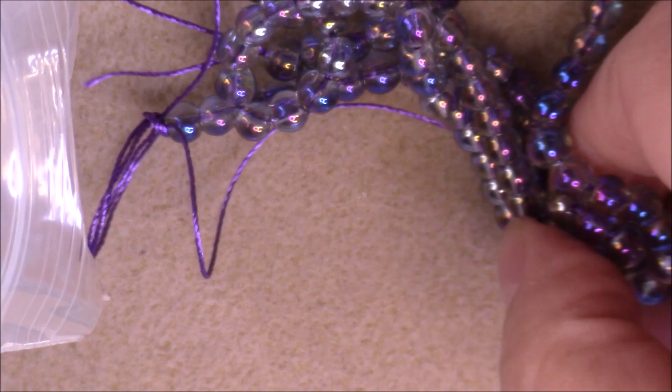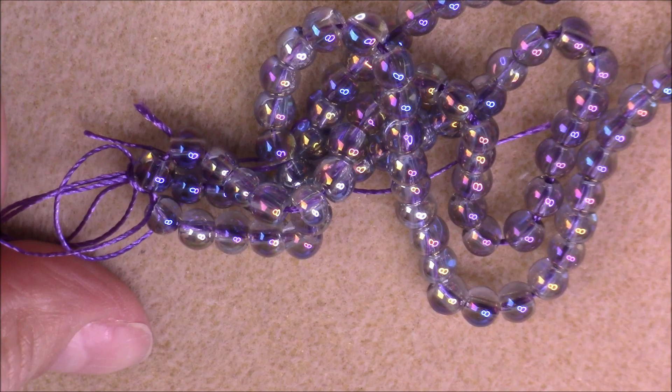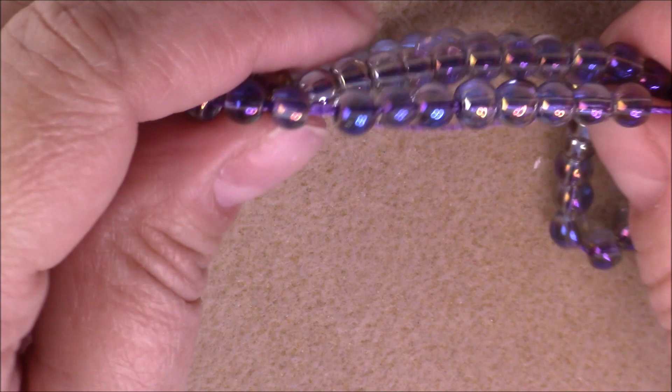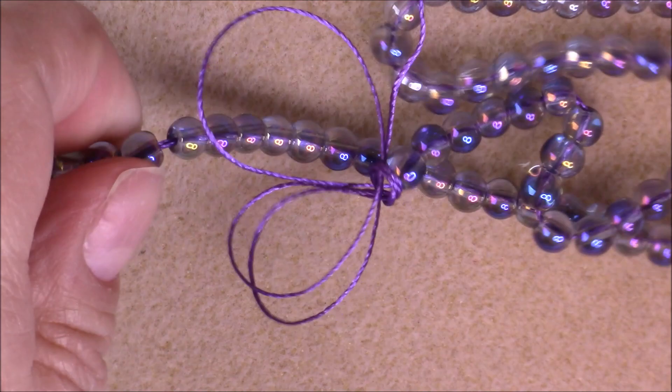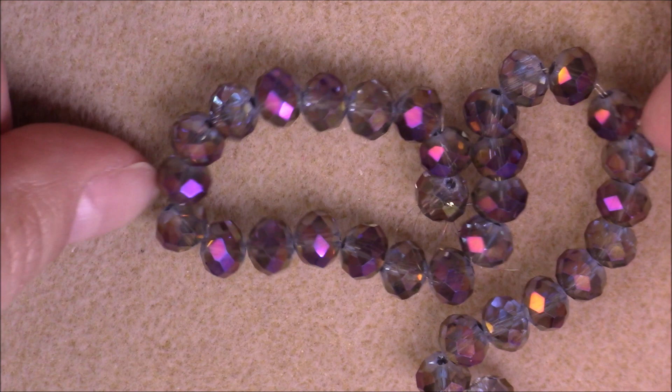So those are our 4mm bicones. Here we have number 12. Number 12 is a 15-inch strand of 6mm glass round beads in slate blue purple iris. Look how gorgeous that is. These are really pretty, iridescent. Very pretty, and keeping with our theme for the amethyst. This is number eight, an 8-inch strand of 8x6mm crystal rondelle beads in slate peacock. And again they're gorgeous too. Look at that, keeping with our amethyst elegance theme. They're really pretty.